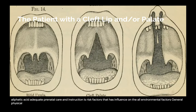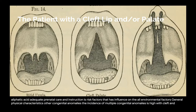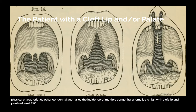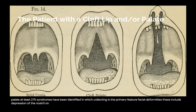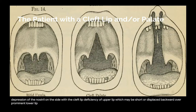General physical characteristics. Other congenital anomalies: the incidence of multiple congenital anomalies is high with cleft lip and palate. At least 275 syndromes have been identified in which clefting is the primary feature. Facial deformities include depression of the nostril on the side with the cleft lip, deficiency of the upper lip which may be short or displaced backward, and over-prominent lower lip.